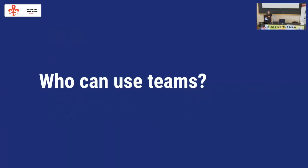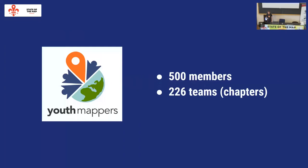Who can use Teams? Anyone using an organized editing group, whether a large corporation or a small chapter group. The main use case thus far is YouthMappers. YouthMappers has a massive network of mappers doing a ton of work on OSM — they've created 226 teams, which are the chapters of YouthMappers, with 500 members. This replaces a ton of manual work where Jennings, the coordinator, was tracking spreadsheets of teams and user IDs across all the third-party applications. OSM Teams is acting as that glue.